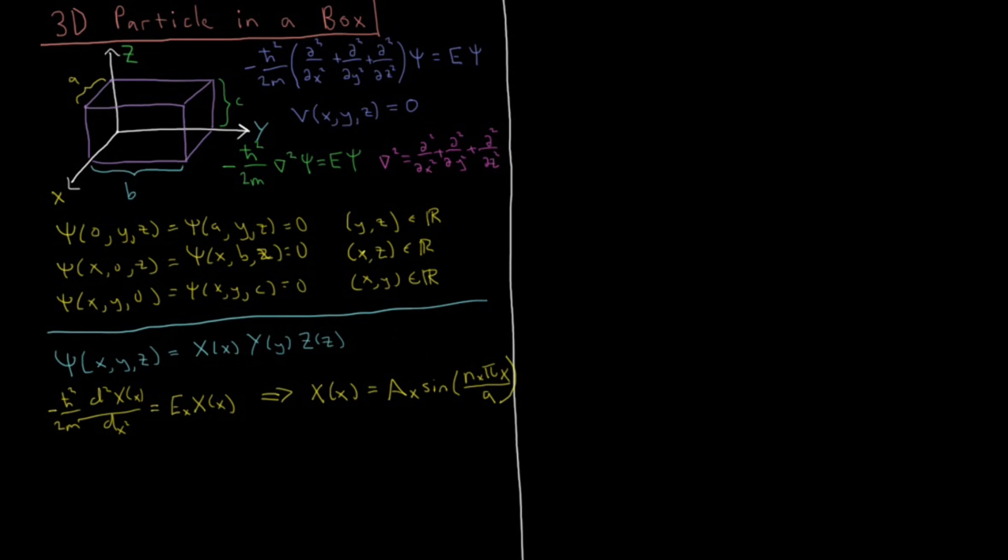Then this procedure repeats itself for the y dimension. We have a second total derivative with respect to the y function, and it has its own energy as well. So the energies here are going to end up summing together, and we have a specific wave function for the y dimension as well, and y has its own quantum number, and that depends on the width of the box in the y dimension.